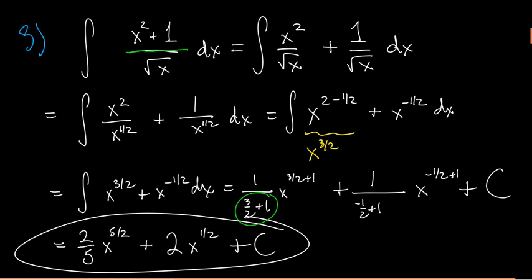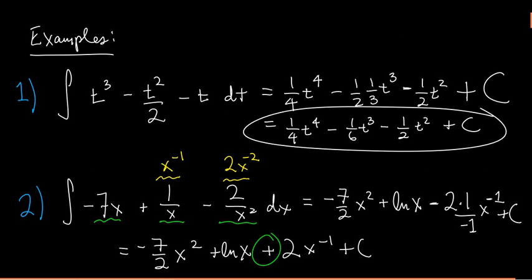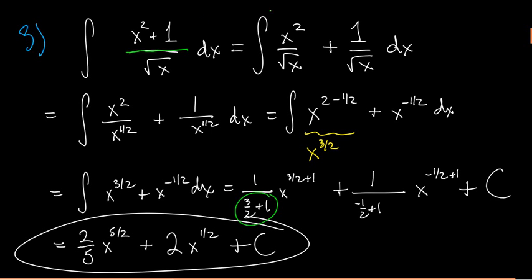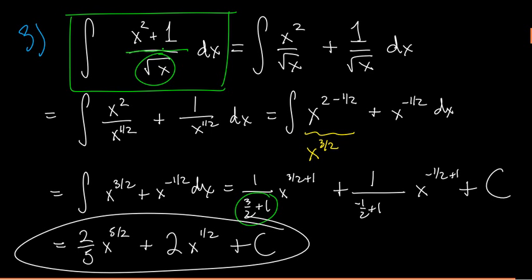So the key ideas are: if there's a constant in front of the integral, just pull it through — it works just like with derivatives. If you have a sum or difference of functions, integrate each one separately. And if the integrand looks complicated, like a fraction with a sum in the numerator and a single term in the denominator, split up the fraction and try to rewrite each piece as x to the power of something, then apply the power rule.